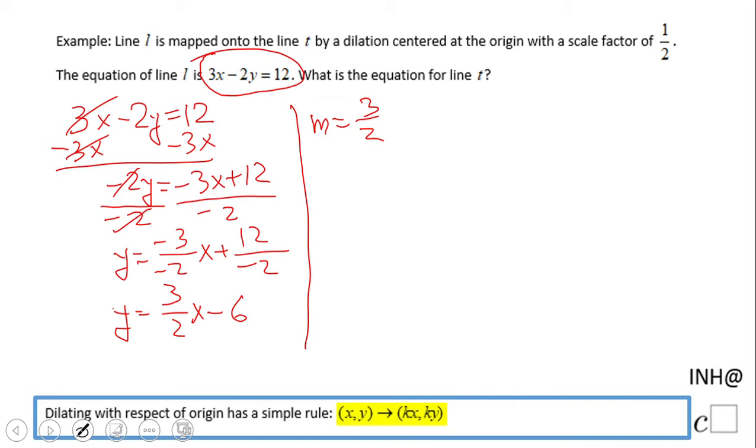And the y-intercept of this given line is (0, -6). So now we're going to find the equation of the second line. Look at how simple it is - the slope is the same.